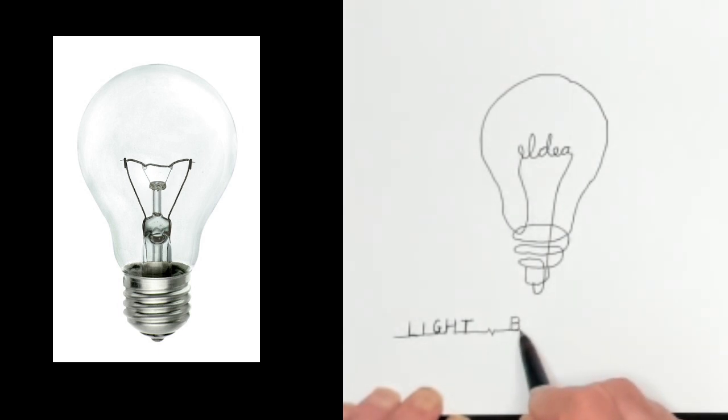Drawing words or names is a good way to do one line drawing also. It helps with your hand and eye coordination. A lightbulb.